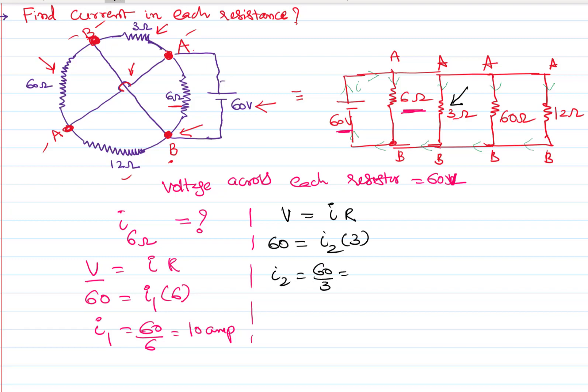Now let's go to this 60 ohms. I need to find the current across it. I will again use Ohm's law: V equals IR. Voltage is 60 volts, I3 I have to find out, R is 60 ohms. So I3 will be 60 by 60, that is equal to 1 ampere.